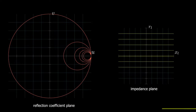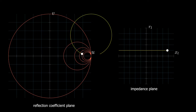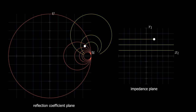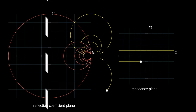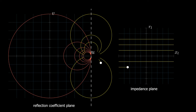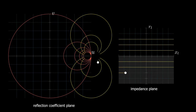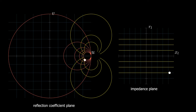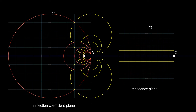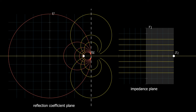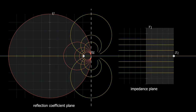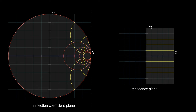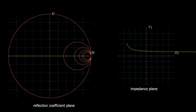Each horizontal line in the impedance plane represents a constant reactance impedance with variable resistance. Moving along a horizontal line forms a circle in the reflection coefficient plane whose radius and center are determined by the reactance value. The circles will be complete if we move from minus infinity to plus infinity on the impedance plane. All the reactance circles are centered on the vertical line U equals 1. Inductive loads correspond to the upper circles, while capacitive loads correspond to the lower circles. The zero reactance line corresponds to a circle with an infinite radius, also centered on the line U equals 1. But we are limited to the right half of the impedance plane for passive loads, corresponding to a reflection coefficient less than or equal to 1, so we are limited to only the parts of the circles inside the unity circle.